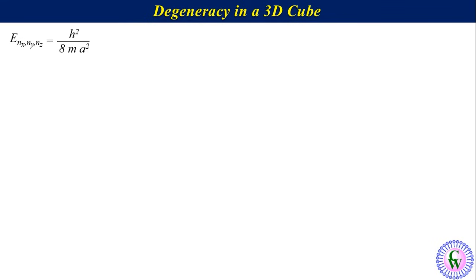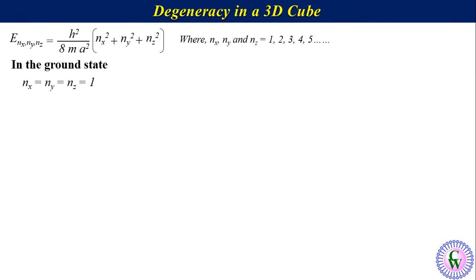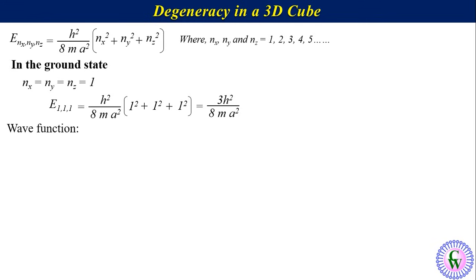We discussed that the energy of a particle moving in a 3D cube equals (h²/8ma²)·(nx² plus ny² plus nz²), where nx, ny and nz take values 1, 2, 3, 4, 5 and so on. In the ground state, nx equals ny equals nz equals 1. There is only one possible wave function, psi(1,1,1), so the degeneracy of the ground state is 1. That is, the ground state is non-degenerate.